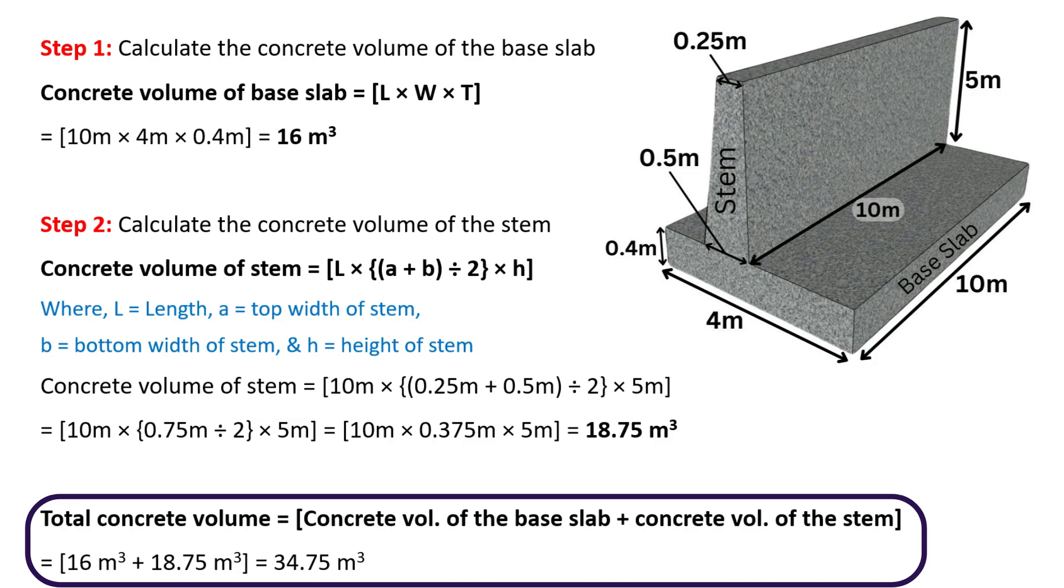Therefore, the total concrete volume of the retaining wall is 34.75 cubic meters. So, we have successfully calculated the concrete volume of the retaining wall. I hope this was helpful.